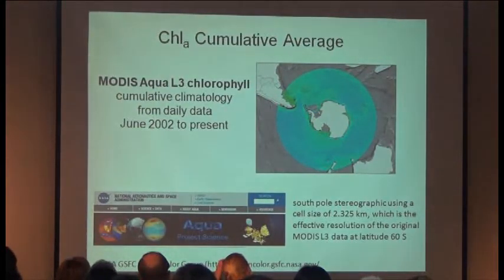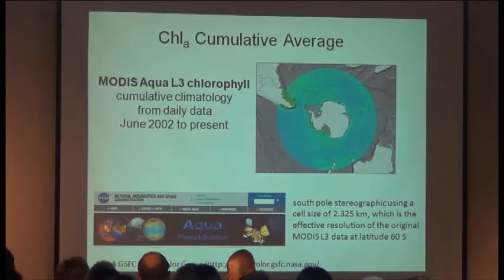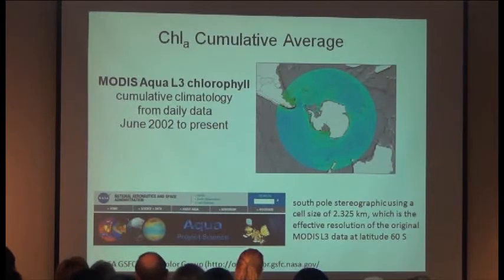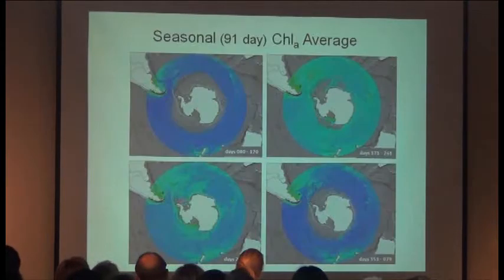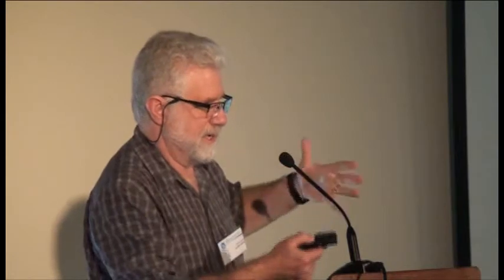In a similar way, this is data looking at chlorophyll. Chlorophyll is an extremely good variable to use to look at productivity in the ocean. This is from the MODIS Aqua sensor. I'm showing just the seasonal averages using approximately 90-91-day averages for creating seasons for the Southern Ocean. This can also be aggregated down to weekly and monthly types of data.